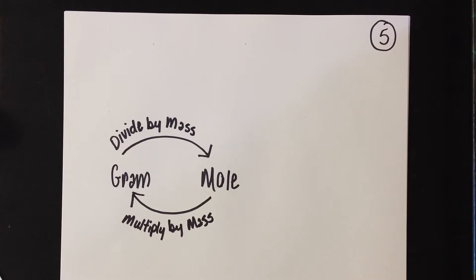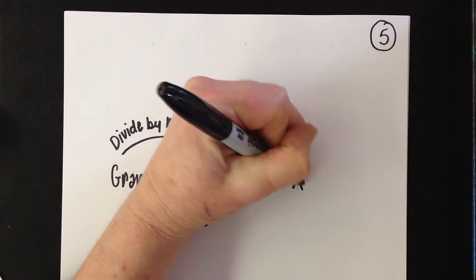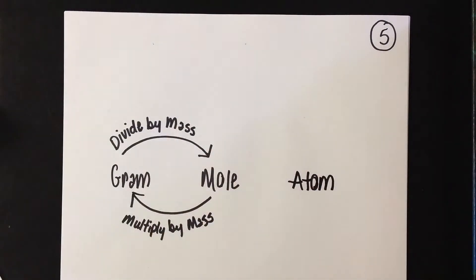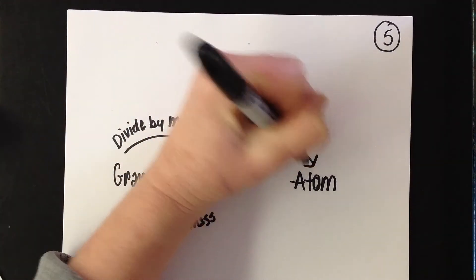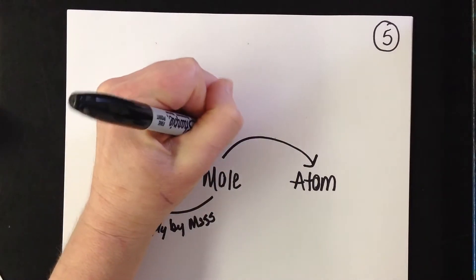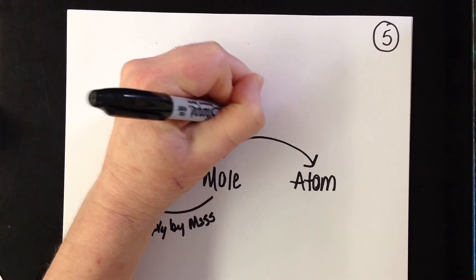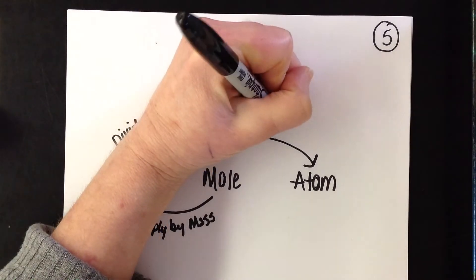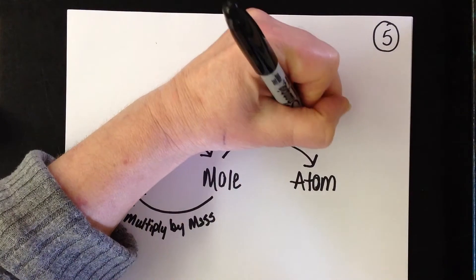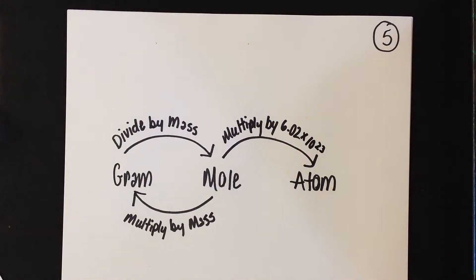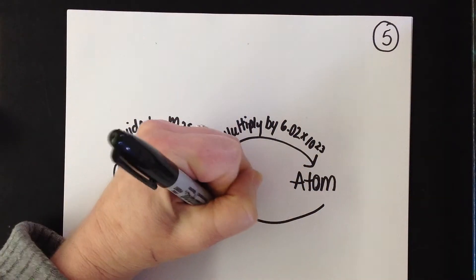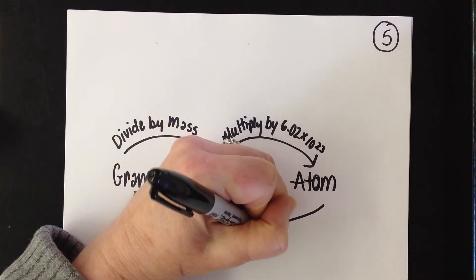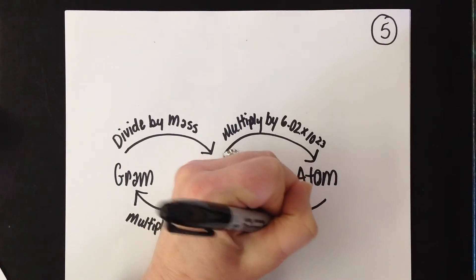We also learned how to toggle back and forth between mole and atom. Going from mole to atom, you multiply by 6.02×10²³. Going from atom to mole, you divide by 6.02×10²³.